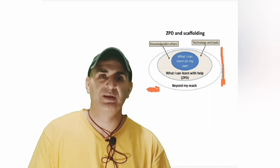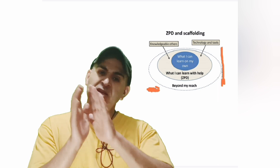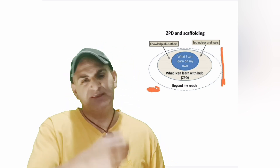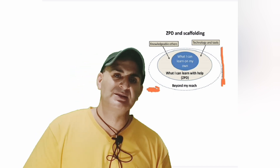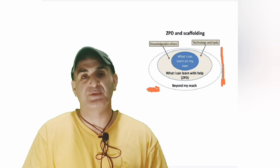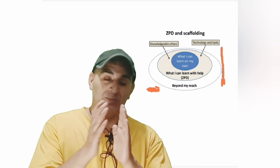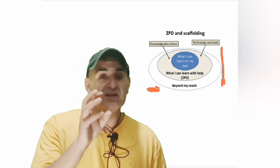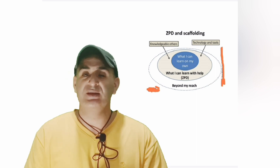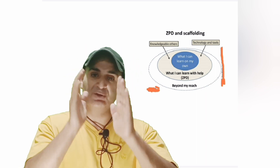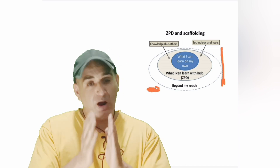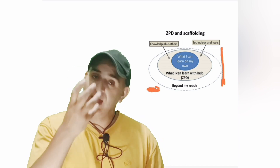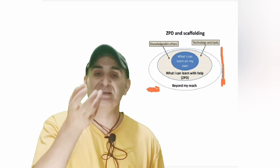Primary students can learn the basics of science. We cannot teach them complex experiments or abstract concepts of science, because they cannot understand those scientific concepts. That is why there should be provision for learning as per the child's interests, capacities, and capabilities.